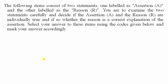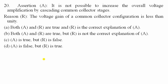This paper has 20 assertion and reasoning questions; 5 are covered in each part. Twentieth question: assertion — it is not possible to increase overall voltage amplification using common collector configuration, since gain ≈ 1. Common collector is also called emitter follower, and voltage gain is at most 1. The reason states the voltage gain of common collector is less than unity — also correct, and it correctly explains the assertion. Option A: both assertion and reason are true, and reason is the correct explanation.